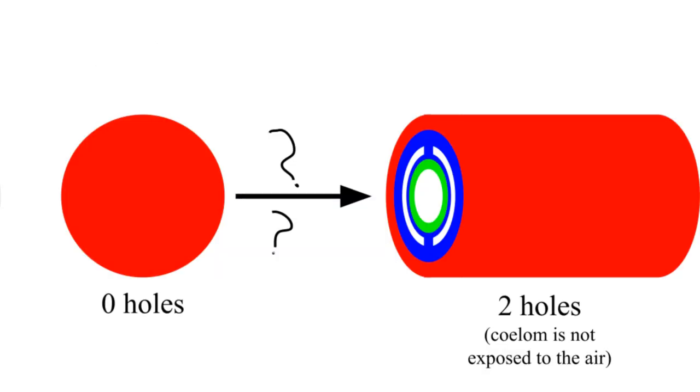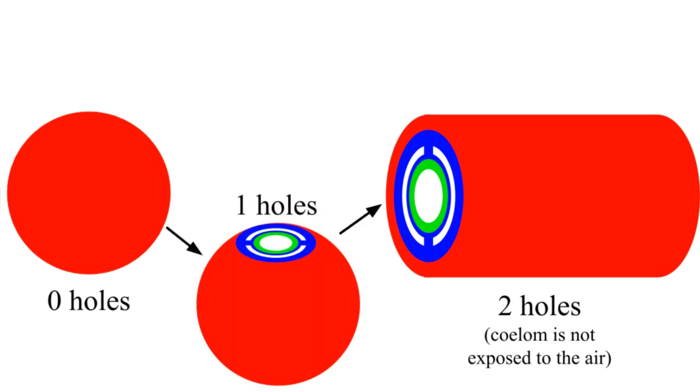But that begs the question, if you recall from metazoa, we all develop from a hollow ball of cells. One hole of the gastrointestinal tract has to form first, and we need to decide which hole is it.